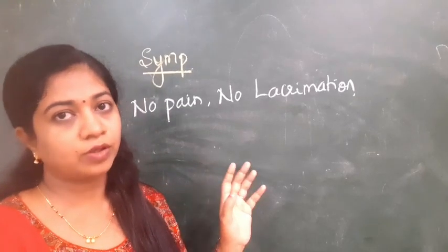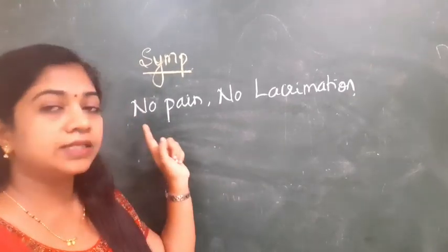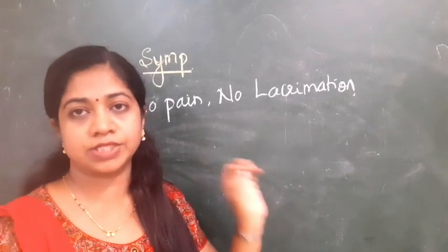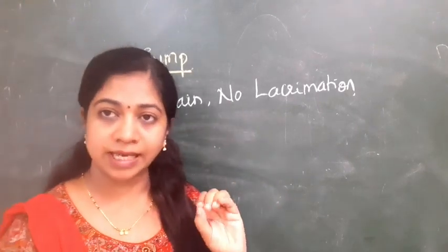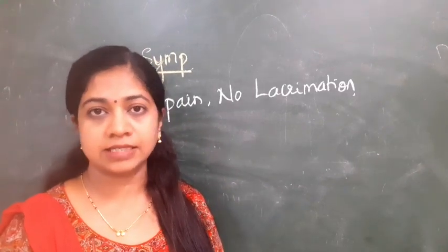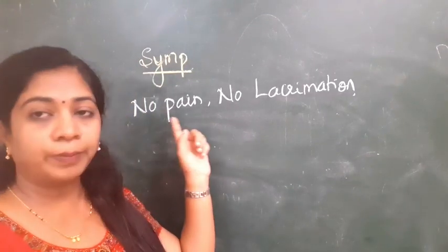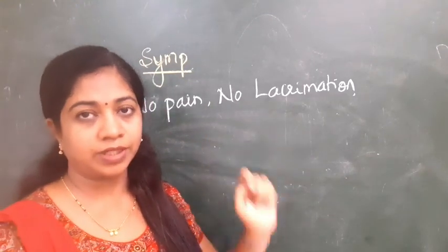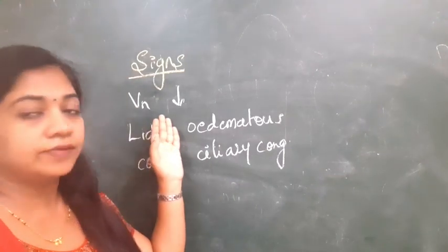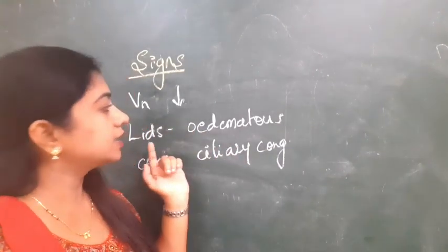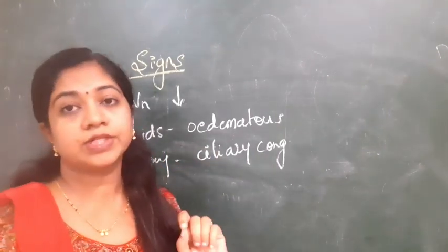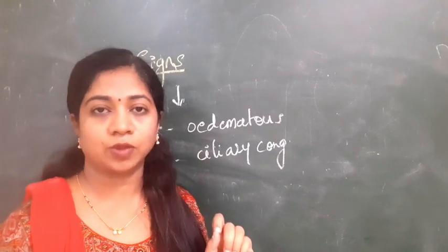In the symptoms of trophic corneal ulcer, what you should remember is there is no pain and there is no lacrimation — these are the characteristic features. The patient can have red eyes, swollen eyelids, and decreased vision depending upon the extent of corneal involvement, but there is no pain and no lacrimation. On checking signs, there can be decreased vision depending upon the extent of the ulcer, and edema or swollen eyelids.